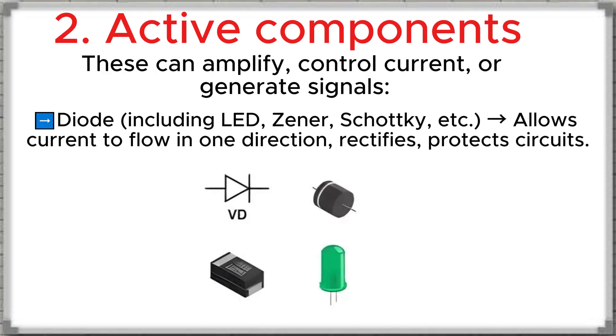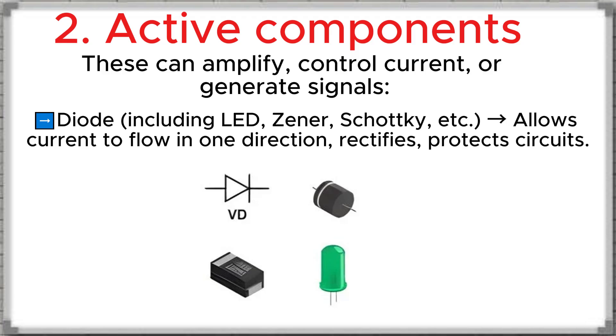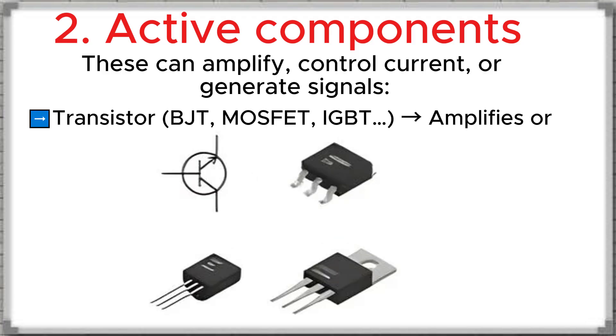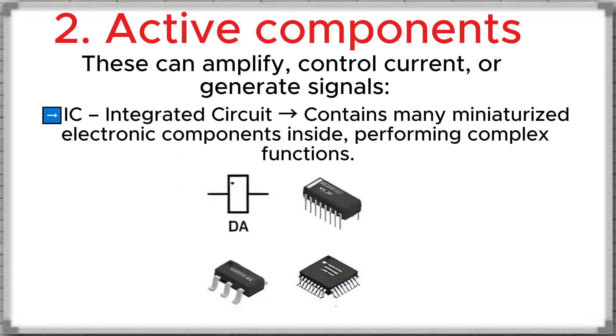They include diode, which allows current to flow in only one direction used for rectification and circuit protection. Transistor amplifies or switches signals. IC, integrated circuit, contains many miniaturized electronic parts inside, performing complex functions.